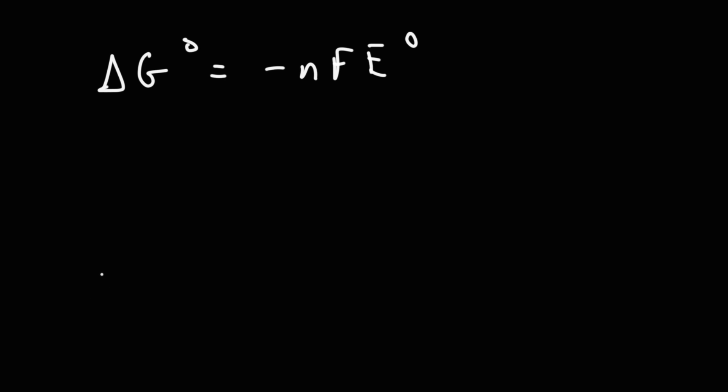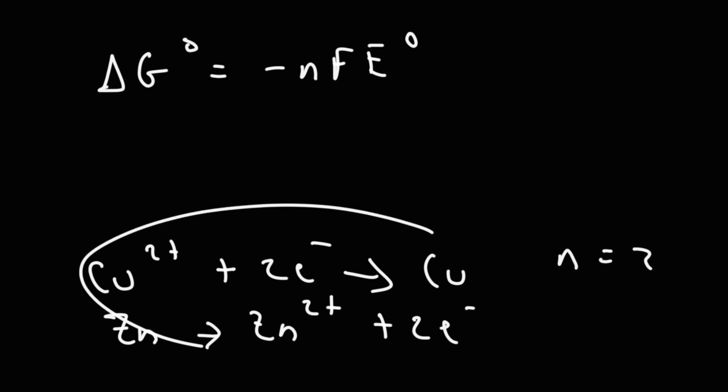In the reaction that we've considered, where copper gained two electrons to turn into copper metal and zinc gave away two electrons, n is two. When you combine these reactions and balance them out, n will be the number of electrons in the balanced redox reaction.